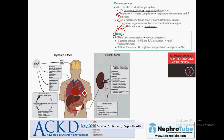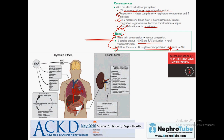With decreased cardiac output, there is decreased perfusion to the kidneys and decreased effective circulatory volume, which activates the sympathetic and renin-angiotensin-aldosterone system, causing more renal vasoconstriction — the same mechanism as hepatorenal syndrome. Both mechanisms decrease renal perfusion, causing oliguria and acute kidney injury.